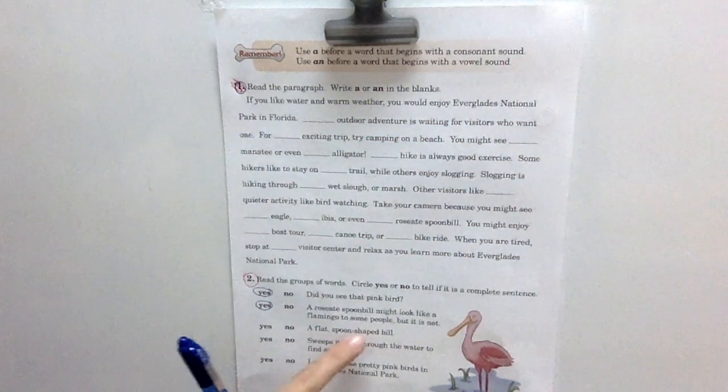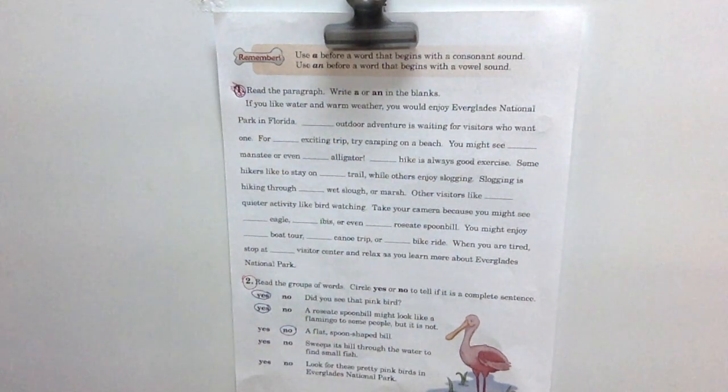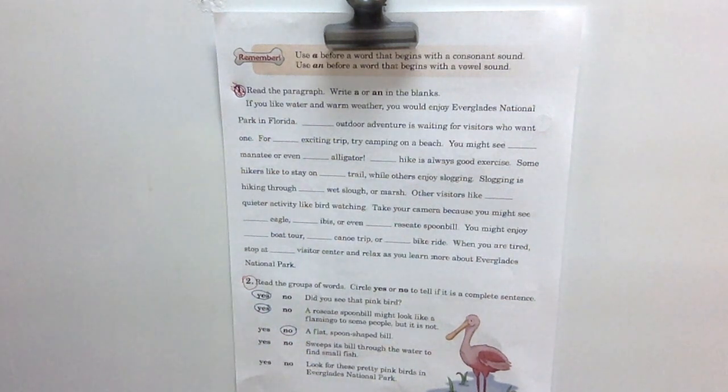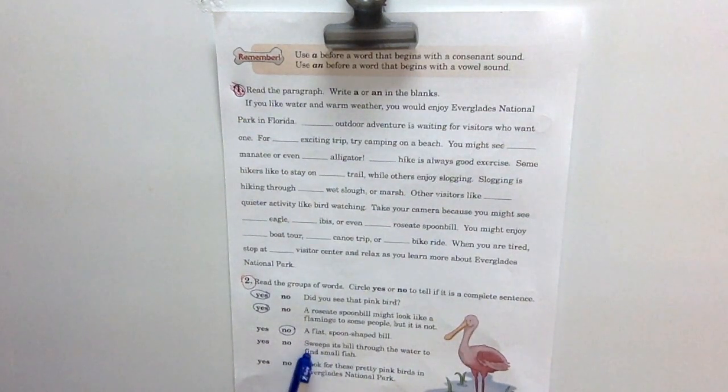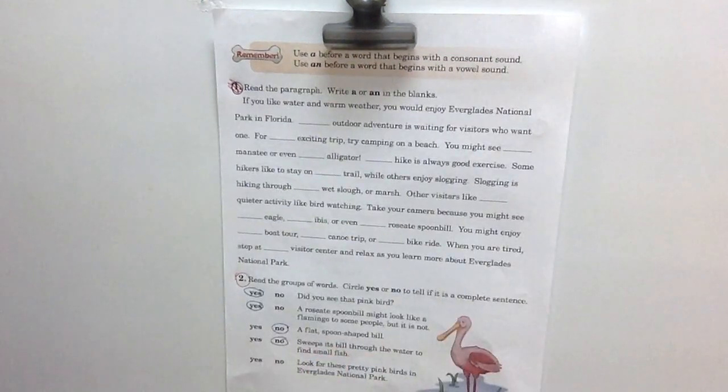A flat spoon shaped bill. That's it. It definitely has a subject but does it have a predicate? Did something happen? Is there a verb? There's no action in this sentence. So it's not a complete sentence. Alright, here we go. Sweeps its bill through the water to find small fish. Let's read that one more time. Sweeps its bill through the water to find small fish. There's definitely action in this sentence but it doesn't tell us who it's talking about. There's no who or what. There is no subject. It's just a predicate. So this is not a complete sentence. Even though it's super long, it's not complete because it doesn't have a subject.